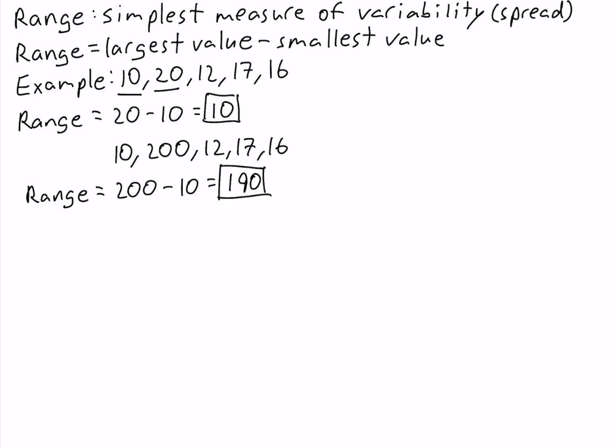So changing just one value increased the range from 10 to 190. When there are extreme values or outliers in the data, the range doesn't do a good job of measuring the variability.